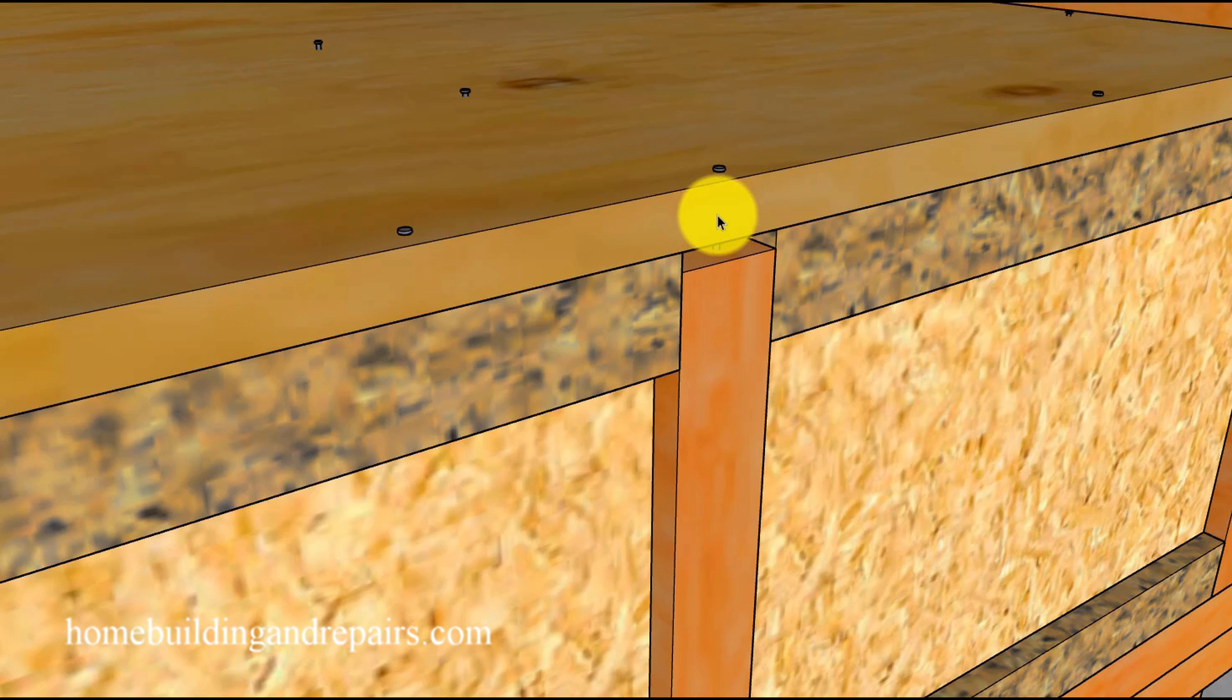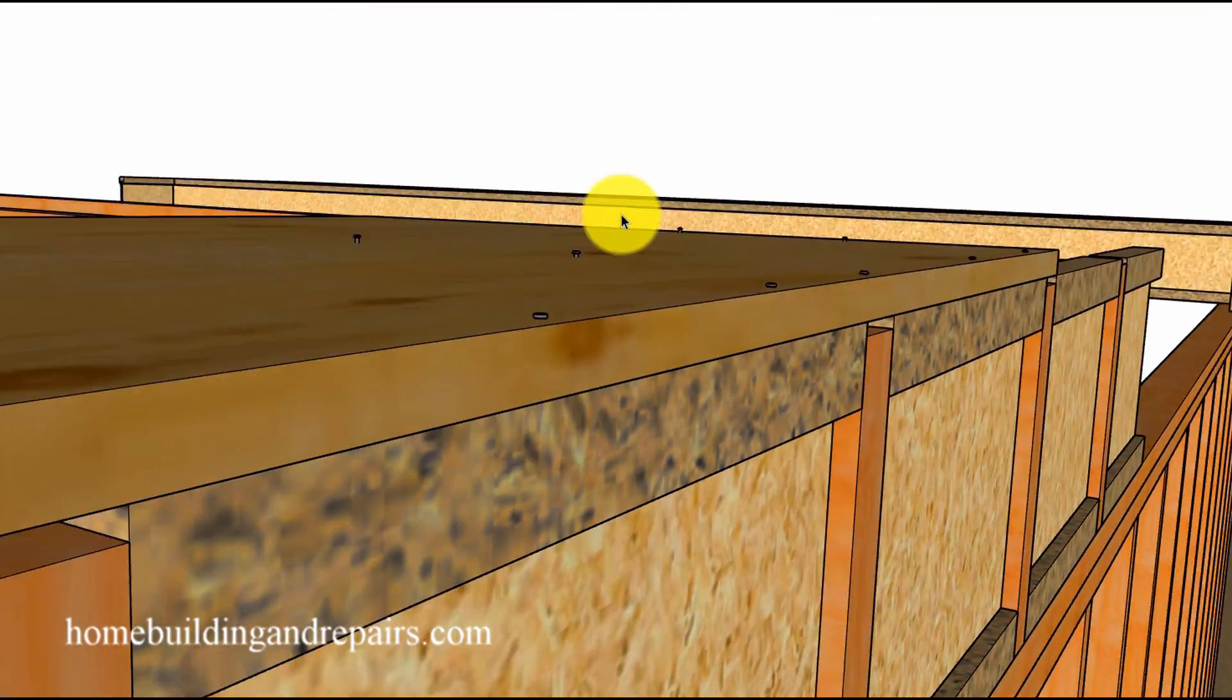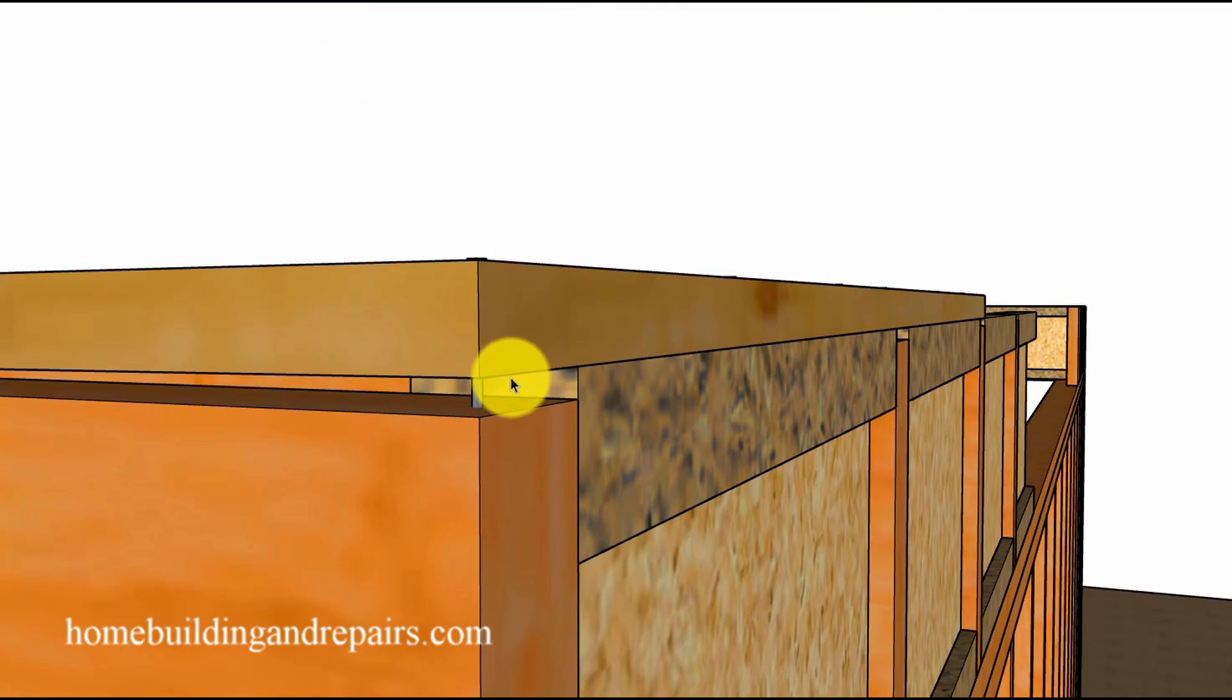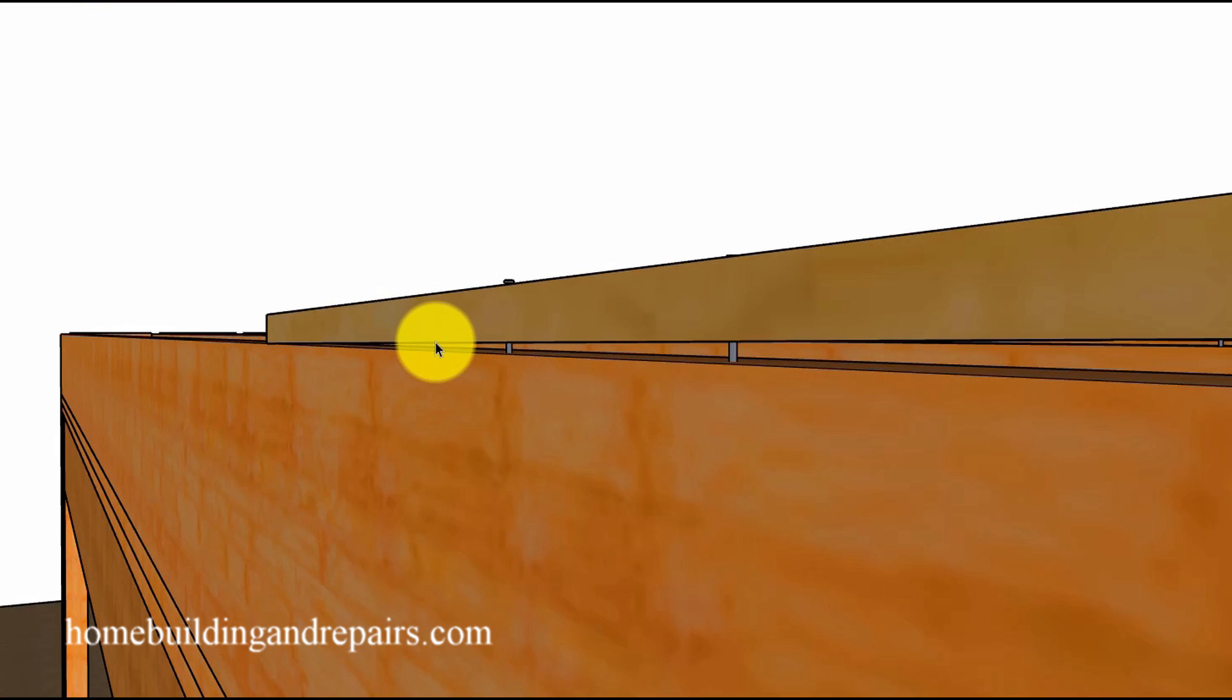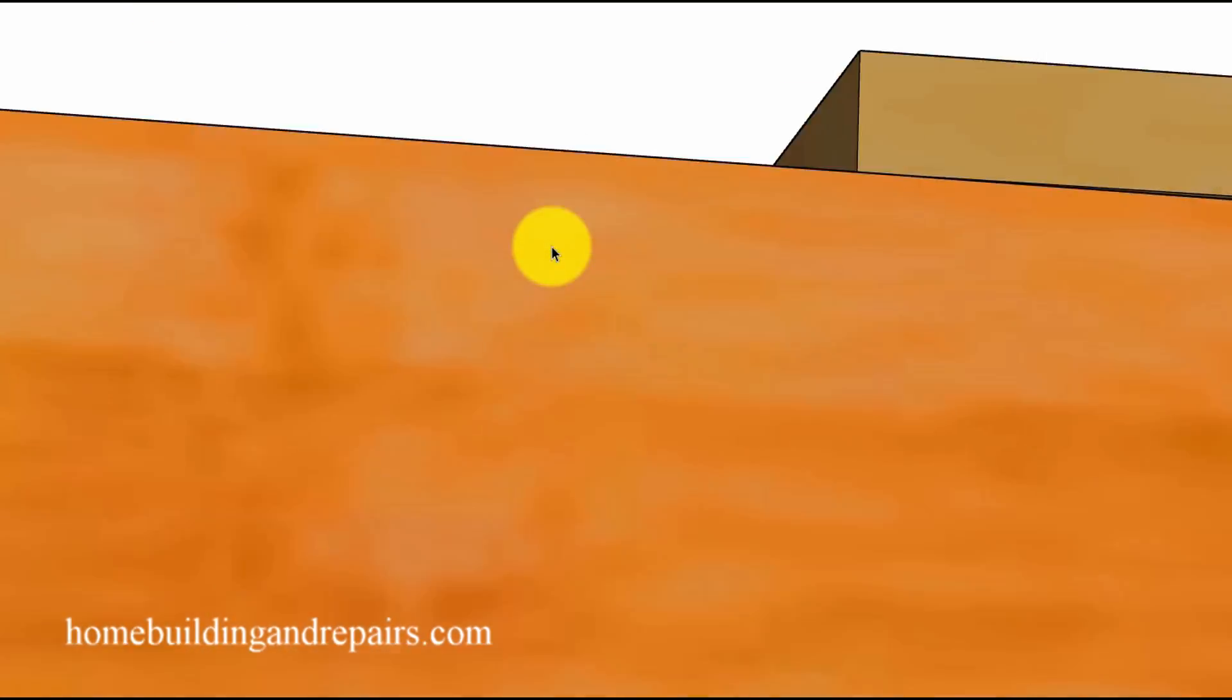Because as the lumber shrinks, it will either need to pull up away from the top of the framing plates or pull down away from the plywood, providing you with a gap like this. And for most of you familiar with lumber shrinkage, this is going to create a squeaking floor.